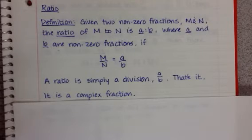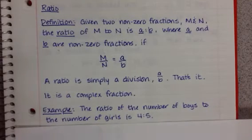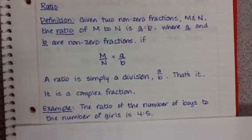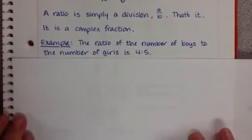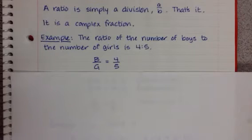So in essence, you could set up a complex fraction. That would be a ratio also. An example: let's say that we had the ratio of the number of boys to the number of girls is 4 to 5. So when we write that, we're going to call boys a capital B or big B, and girls is going to be big G. So if we set this up as a comparison or a division, it would be B to G is going to be equal to 4 to 5.